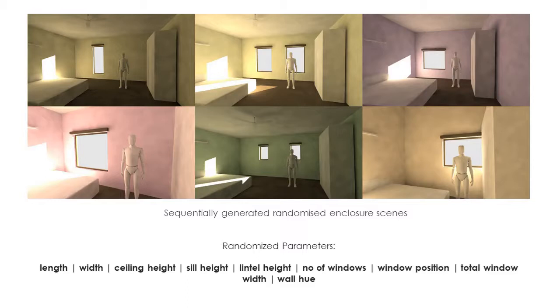Now for demonstration, the data collection workflow involved a custom Python script within Rhino which generated a hundred spatial enclosures, all bedrooms, randomized along nine spatial parameters: length, width, ceiling height, sill height, lintel height, number of windows, window position, total window width, and finally wall hue.